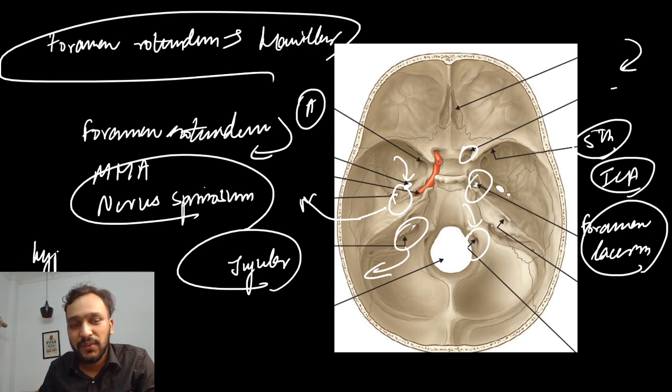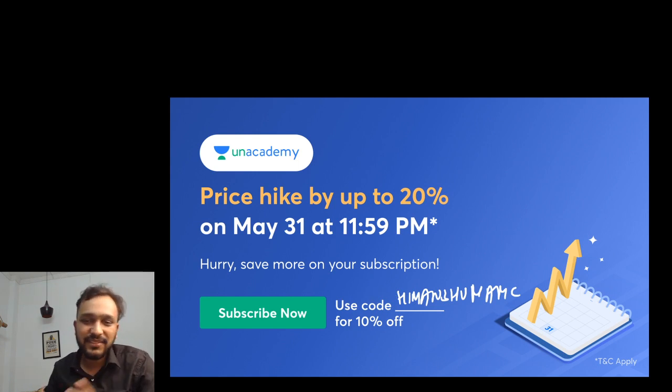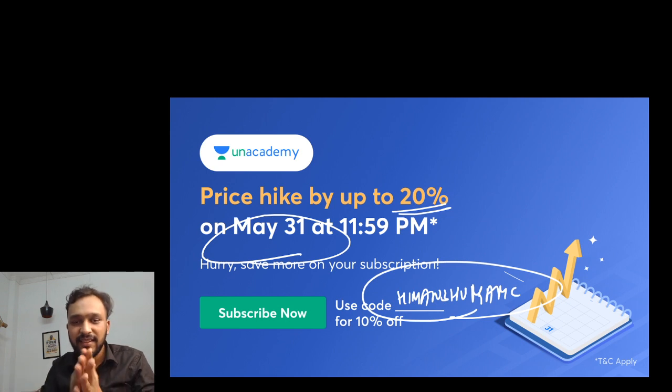So I hope you are clear with all the important foramina of the skull. So guys, if you are going for the Unacademy subscription, I would like you to use this code HIMANSHUKAMCI that will give you an additional 10 percent discount. And there is a price hike after 31st May so you can save a lot of money if you go for the subscription today itself. Thank you guys, I hope you enjoyed this short video and if you want me to make more such videos like this, do let me know in the comment section below.